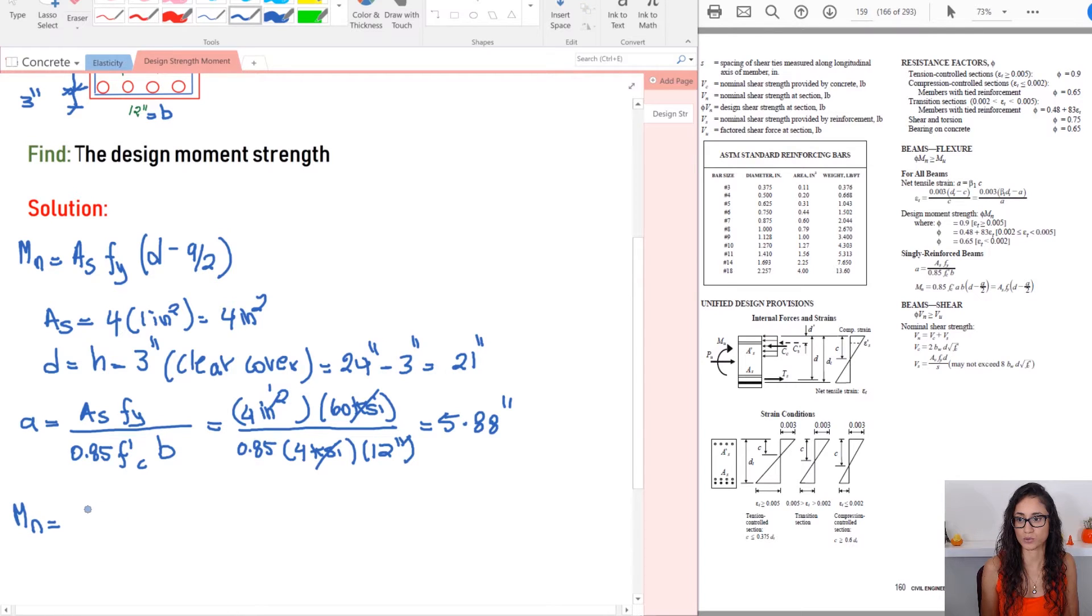So let's plug in all the numbers in our equation. So we have MN is equal to four inch squared multiplied by FY, which is 60 KSI. Then we have times D, which is 21 inches minus 5.88 inches divided by two. And I'm going to divide everything by 12, just so I can, this is just for conversion because usually MN or the moment is given in units of kips feet instead of kips inches. And if you don't divide by 12, you're going to get an answer of kips inches.